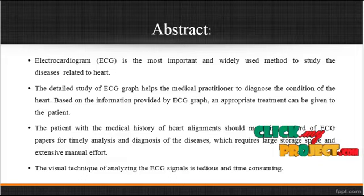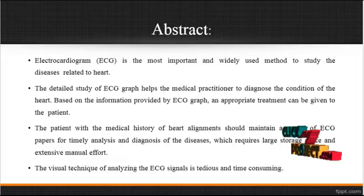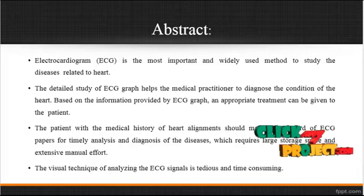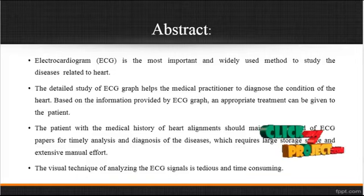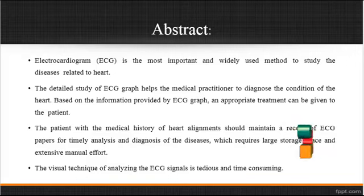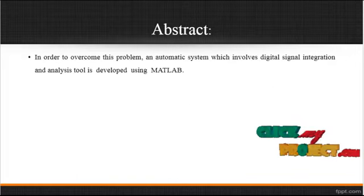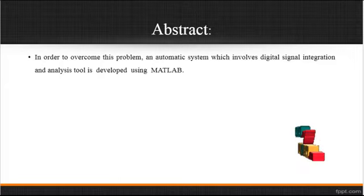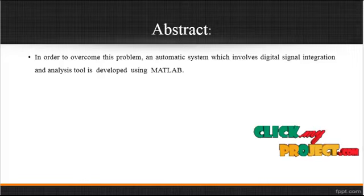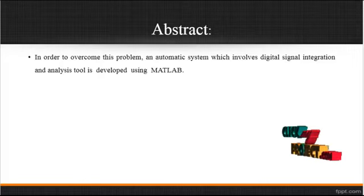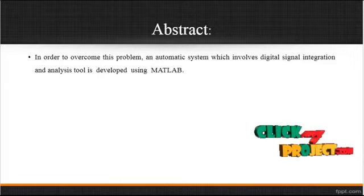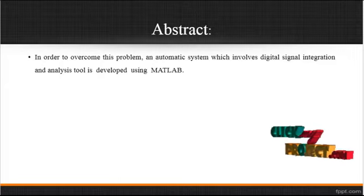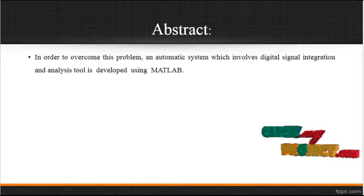Patients with a medical history of heart ailments should maintain a record of ECG papers for timely analysis and diagnosis, which requires large storage space and extensive manual effort. The visual technique of analyzing the ECG signal is tedious and time-consuming. Hence, to overcome this problem, an automatic system involving digital signal integration and analysis is developed using MATLAB, which is efficient at classifying whether a signal is affected by arrhythmia or not, with more reliability than conventional methods.